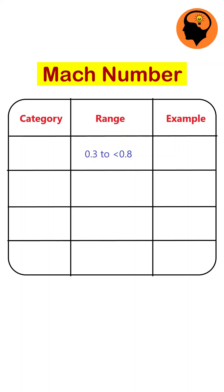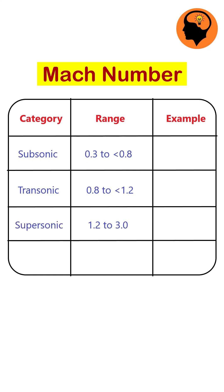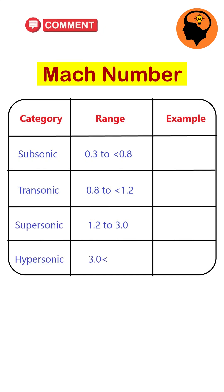Mach numbers from 0.3 to less than 0.8 indicate subsonic speed. From 0.8 to less than 1.2 indicates transonic speed. From 1.2 to 3 indicates supersonic speed, and greater than 3 indicates hypersonic speed.